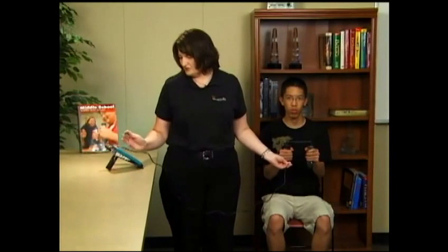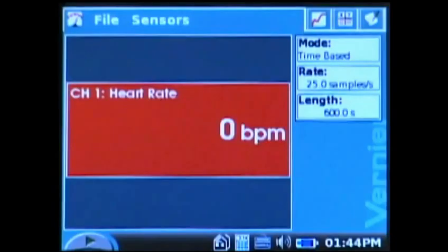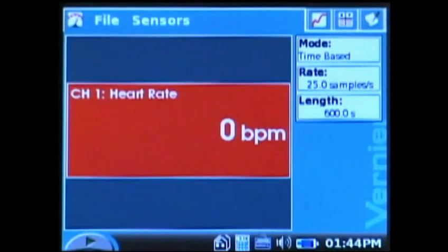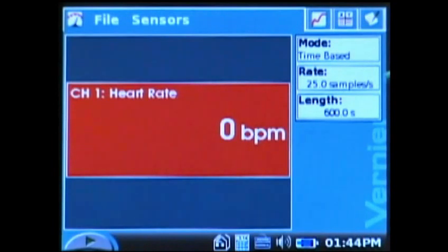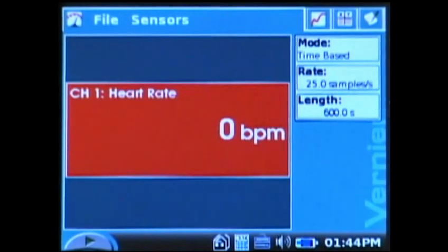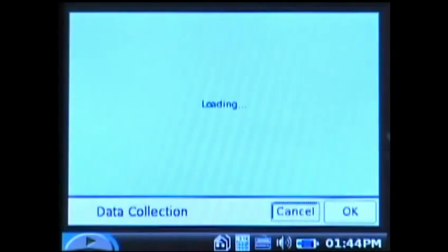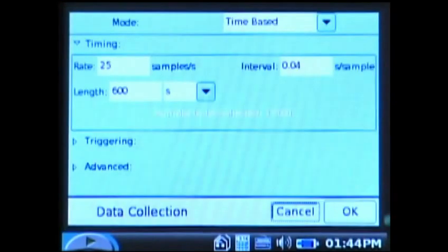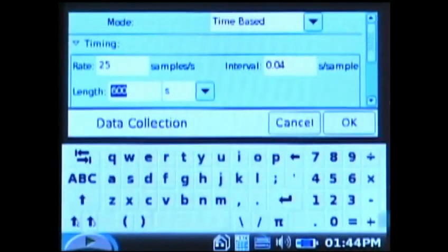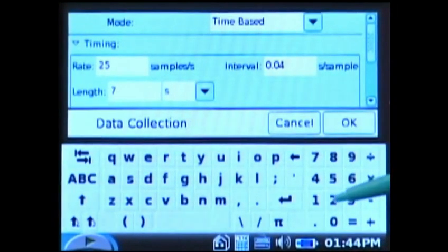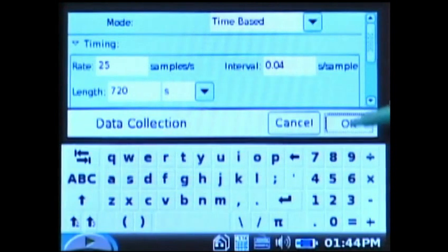The first thing I need to do is do one little change on the LabQuest app. The default rate and length for the hand grip heart rate monitor is 25 samples per second and a length of 600 seconds. We need to lengthen that to 720 seconds. So I'll tap on the length and change that 600 to 720 and say OK.